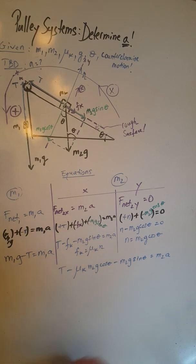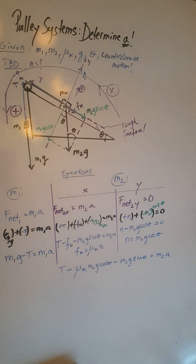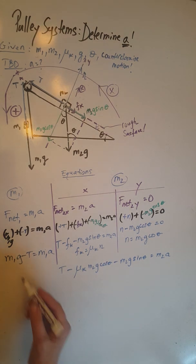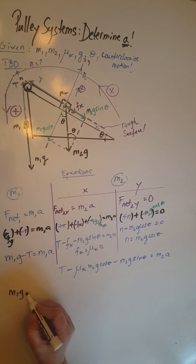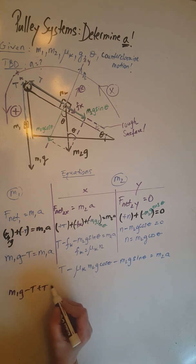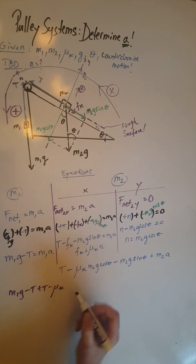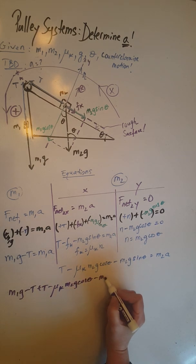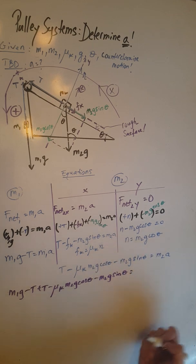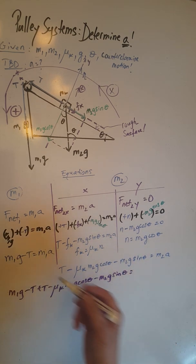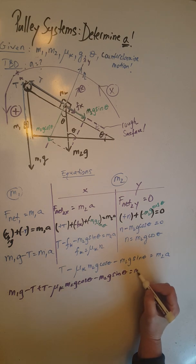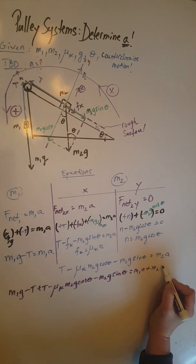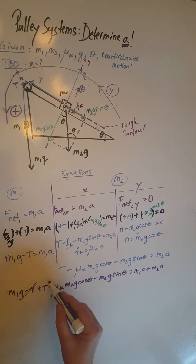And we are going to do that by adding the two equations like we've done in the previous problems. When we do that, let's go ahead and do it. We are going to have m1g minus T plus T minus mu k m2g cosine theta minus m2g sine theta on the left hand side, and on the right hand side we have m1a plus m2a.